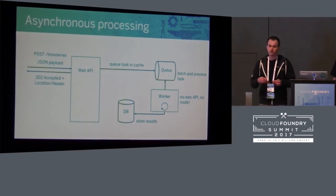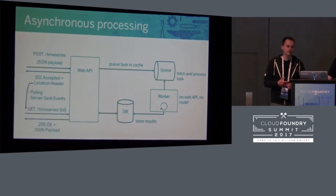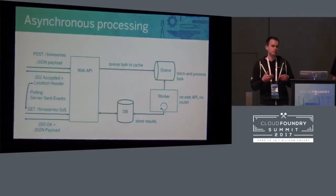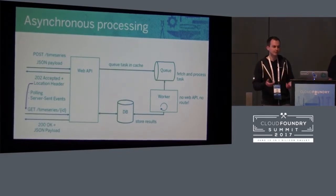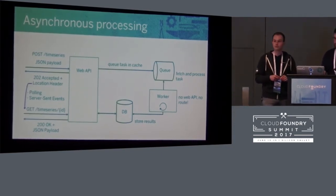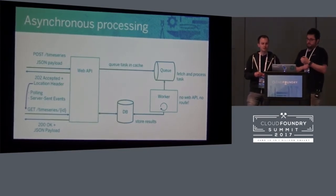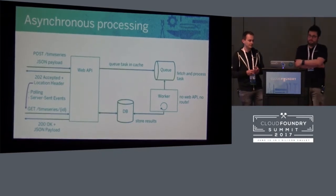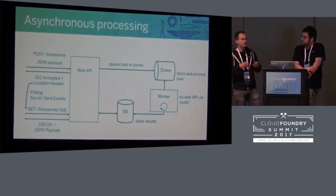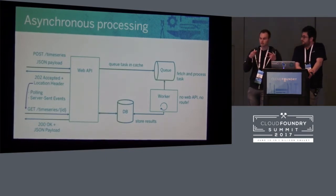By its nature, the worker node comes with no web API and no route. Once the worker is done processing the request, it stores the result in the database as before. The client can use the same GET endpoint to fetch time series data, using polling or server-sent events. We've already gained some awesome advantages: we got rid of the whole state in the web API, and once you return a 202 Accepted to a client, you can be very confident that the task is in the queue and eventually the worker will fire up and work on it.